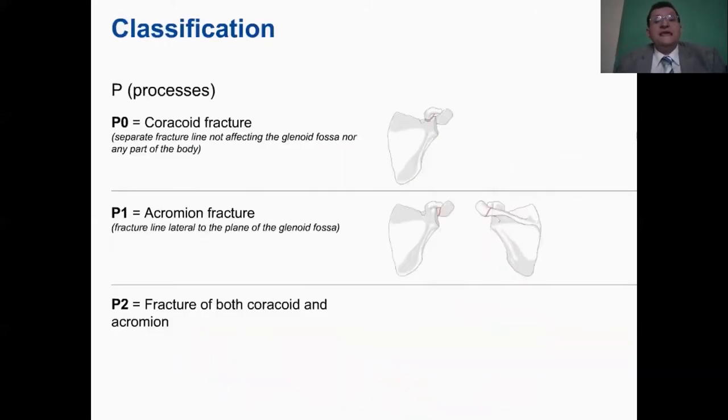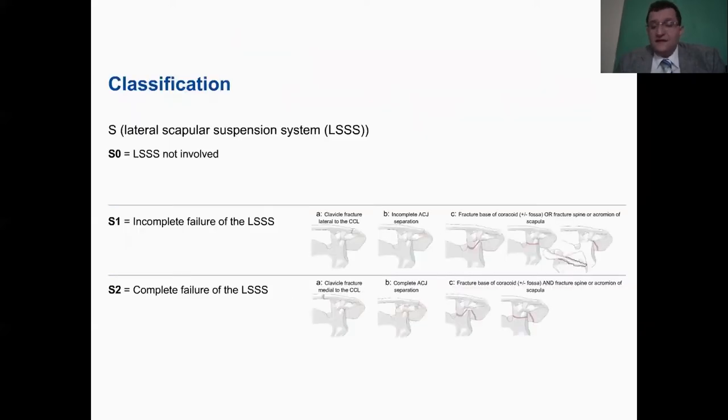What about P? P stands for a fracture of the coracoid. P0 is a fracture of the coracoid. P1 is a fracture of the acromion, while P2 is a fracture involving both the acromion and the coracoid.